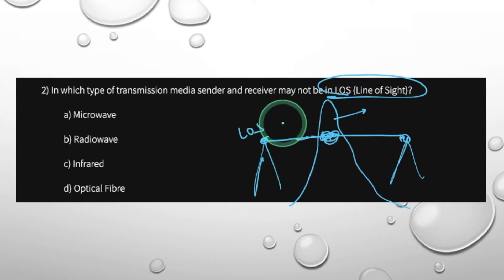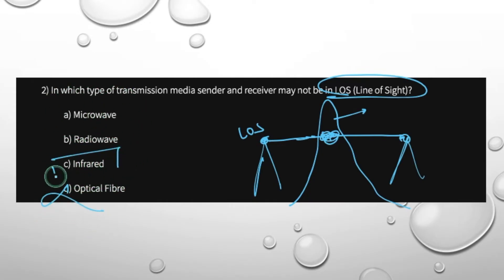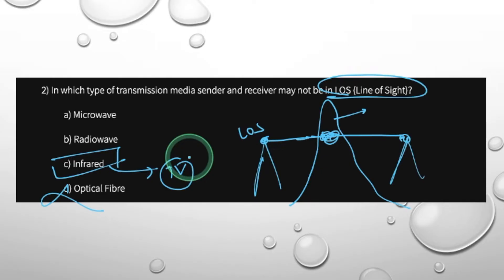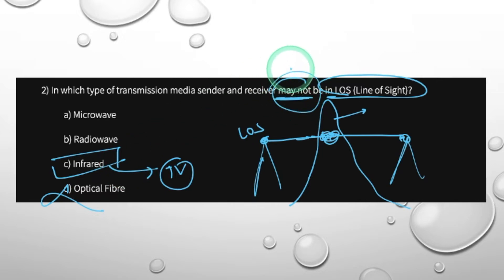For long-distance transmission using wireless media, obviously it is wireless media. This is optical fiber — it has no line-of-sight. The question uses the phrase 'may not' — meaning line-of-sight may not be required.